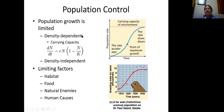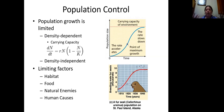There are also things that can limit population growth that are density-independent — it doesn't matter how many individuals there are in the population, something is going to prevent the population from growing. We're going to look at a number of different limiting factors — habitat, food, and natural enemies — and think about whether they're density-dependent or density-independent, and also consider some of the human causes that might be limiting populations.